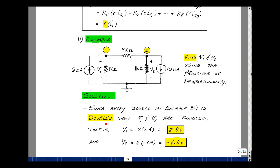Well, since we doubled every source, we took something that was 3 milliamps, made it 6, 5 milliamps, made it 10, and the voltage we solved for before, which was 1.4 for V1 and minus 3.4 for V2, they're doubled. Now the voltage is 2.8 and minus 6.8.